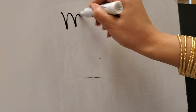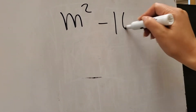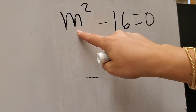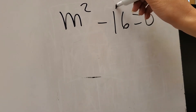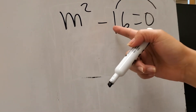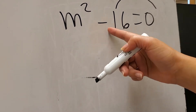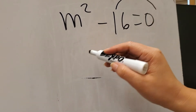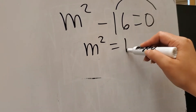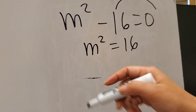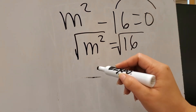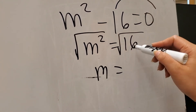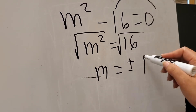Another example: suppose you have m squared minus 16 is equal to 0. To find m, before you extract the square root, you have to transpose negative 16 to the other side first. Since the sign of 16 is negative, when you transpose it, it becomes positive. So m squared is now equal to positive 16. You can now get the square root of both sides, giving you m equals positive and negative 4.